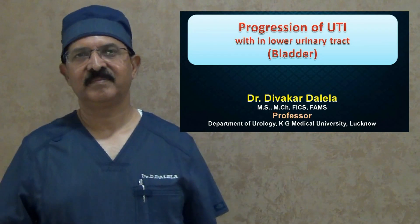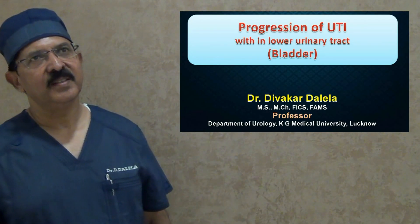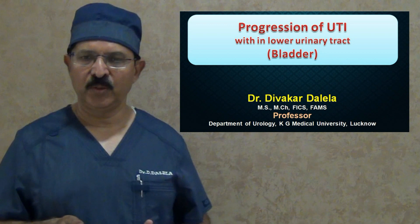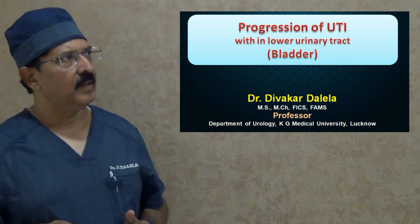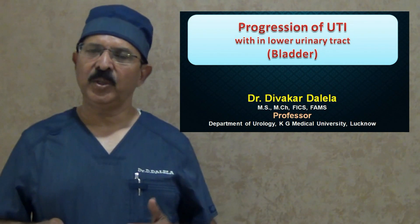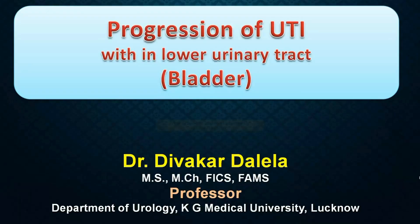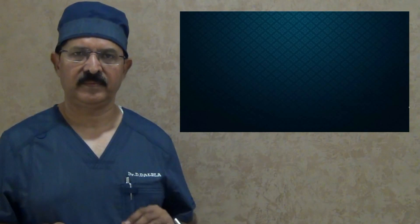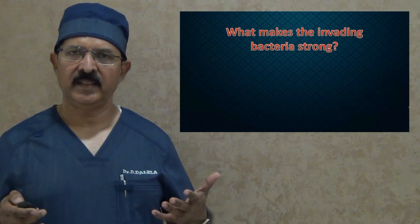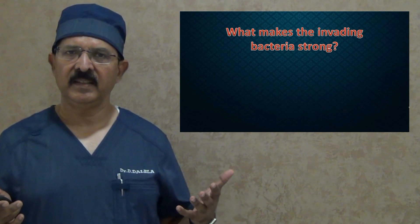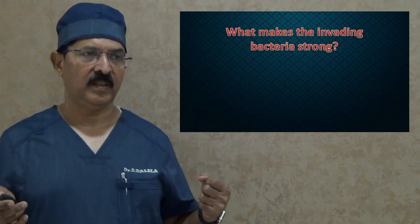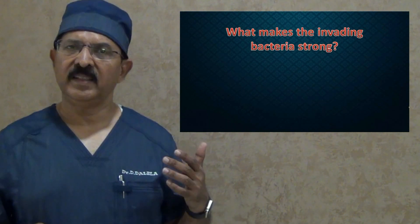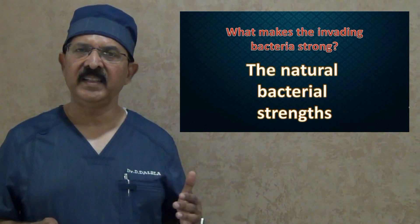Hello friends, in continuation to my earlier talks about how the infection progresses within the urinary tract. In this video I want to talk about the second aspect — what allows the bacteria to invade the urinary bladder. What is there in the bacteria which makes it so strong, so pathogenic that it is capable of creating a nasty infection. These are called the natural bacterial strengths.